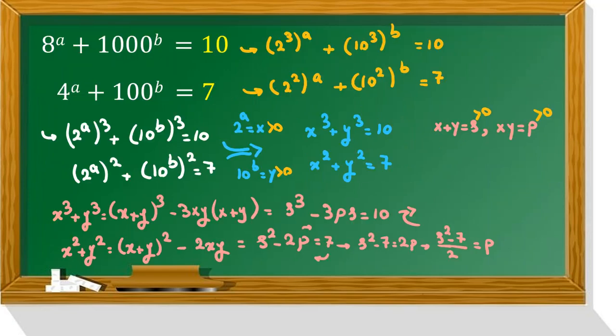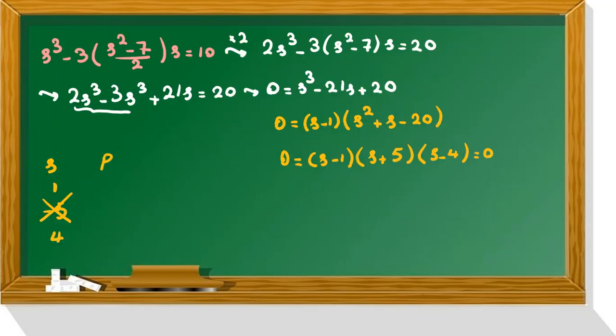Now p is what? From here, p is s squared minus 7 over 2. First one, 1 squared, 1 minus 7 over 2, minus 6 over 2, minus 3. This one is also bad, so s equals 4.